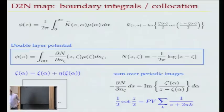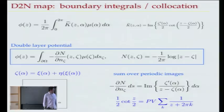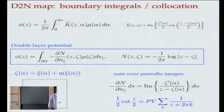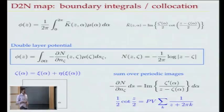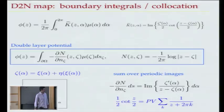I've complexified in order to do the sum over periodic images. Zeta of alpha is alpha plus i*eta(alpha) — you move over alpha and go up eta. Since I'm on a periodic domain, in the 2D case you can actually do that sum: instead of 1/(z - zeta), you end up with (1/2)*cot((z - zeta)/2). So given mu, I do this integral involving cotangents to get phi in the fluid. Think of this as just (1/2pi) * log r — that's phi.